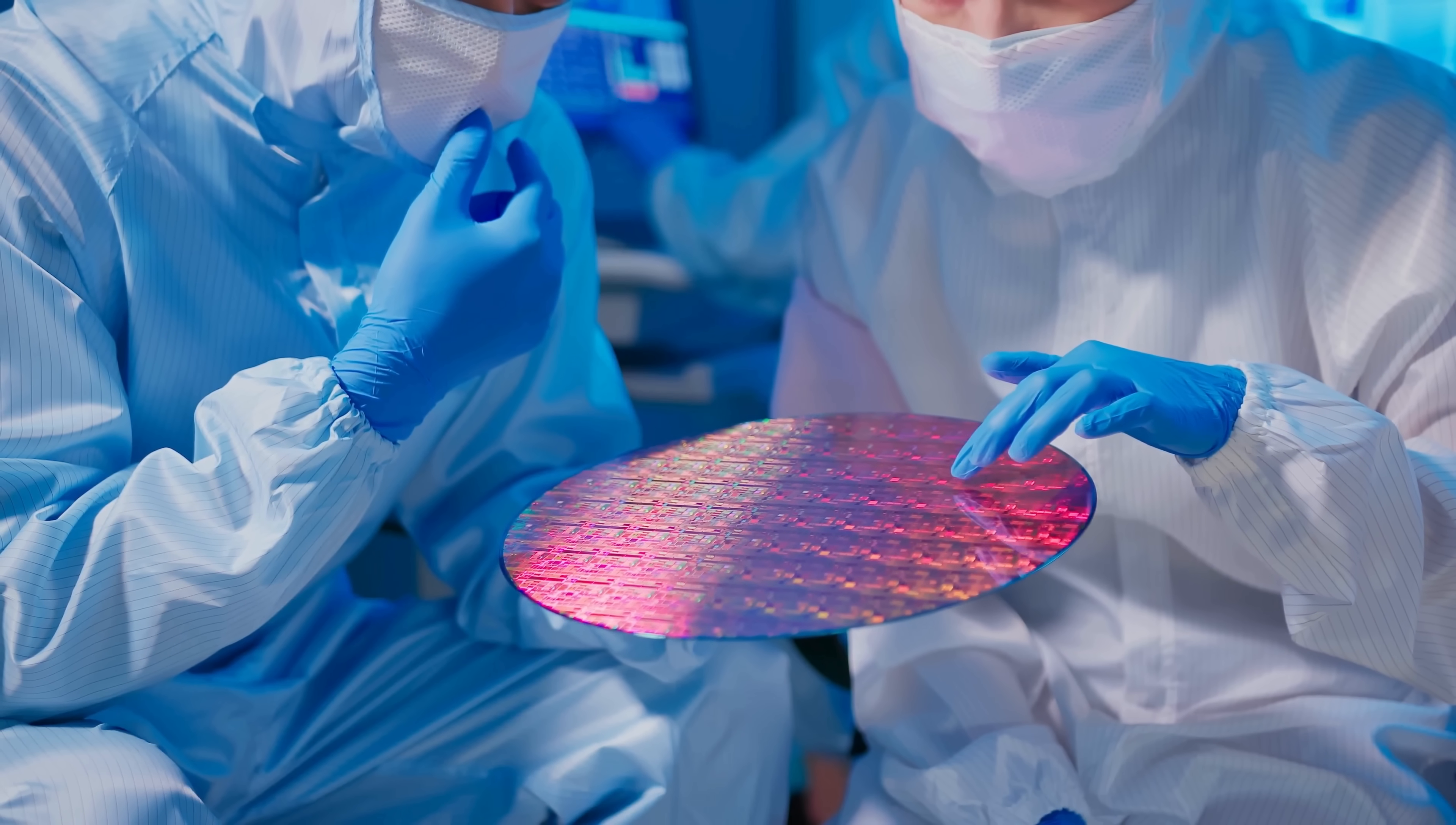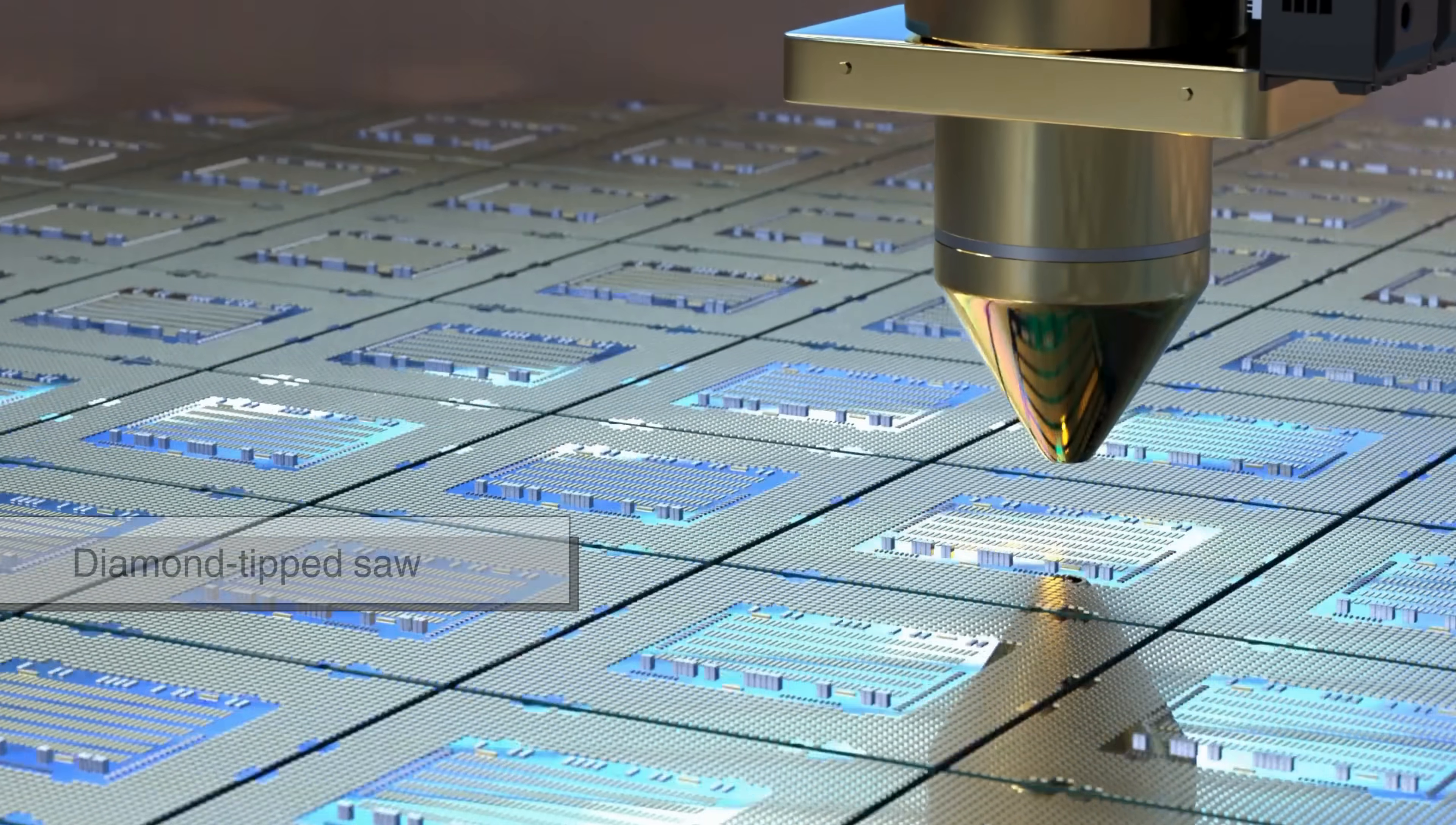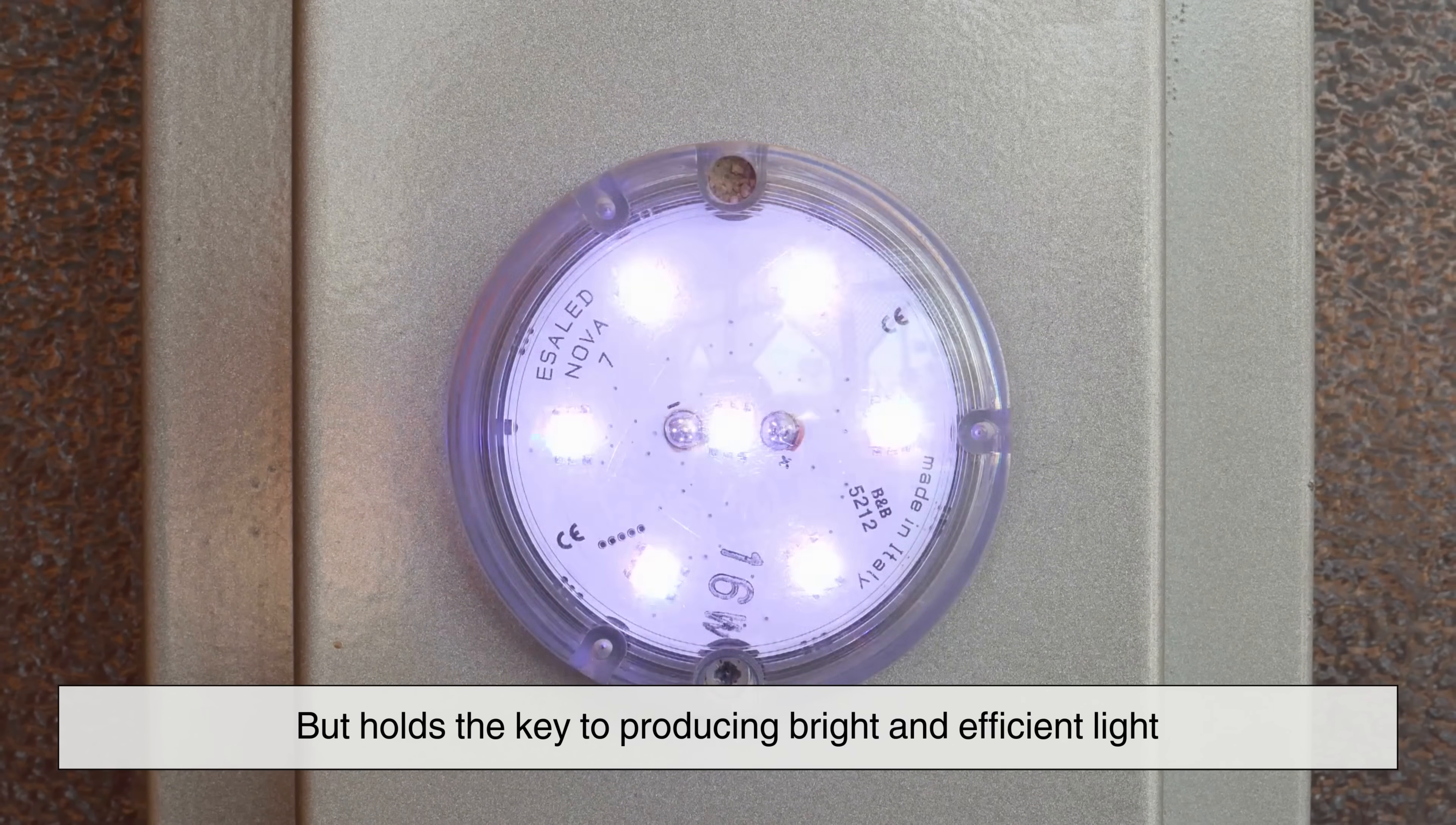Once the semiconductor wafer is grown and tested, it is sliced into tiny individual chips. These chips, known as LED dies, are the actual light-emitting components of an LED. To do this, manufacturers use a diamond-tipped saw or laser-cutting technology to precisely cut the wafer into thousands of microscopic chips. Each of these chips is just a fraction of a millimeter in size, but holds the key to producing bright and efficient light.